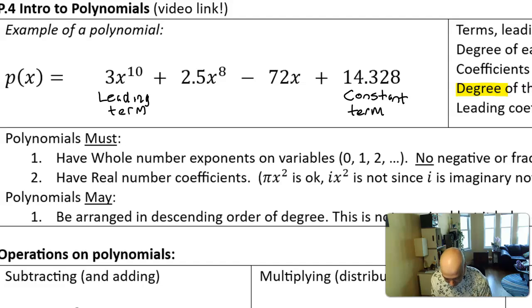The numbers in front of each term, so this 3 to 72 and technically this 14, are called the coefficients. And the specific coefficient of the leading term is called the leading coefficient.